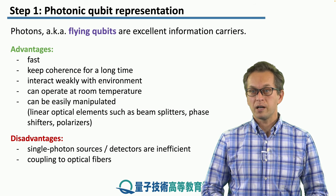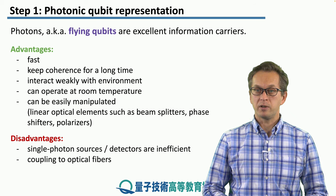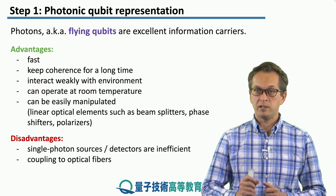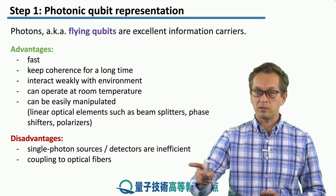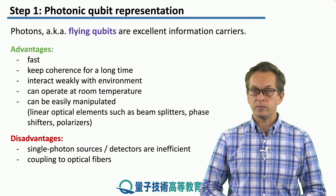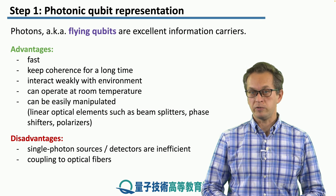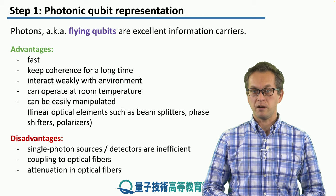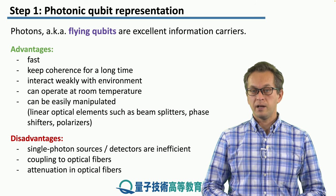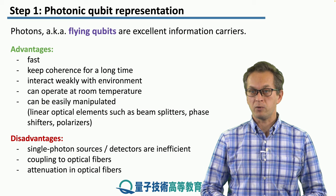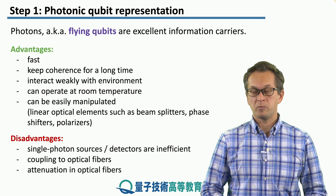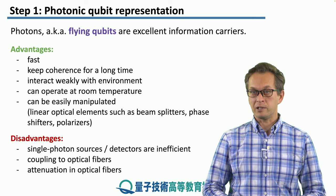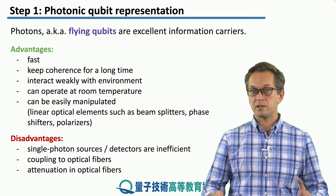Also, coupling photons into a fiber is quite challenging. Once we produce the photon, there is no guarantee that it will couple to a fiber and travel towards the distant node of a quantum network. And lastly, there is attenuation in optical fibers. As photons travel, there is a high probability that they will get lost if the distance gets too long.